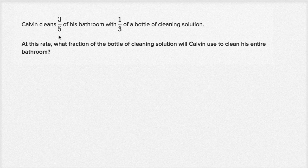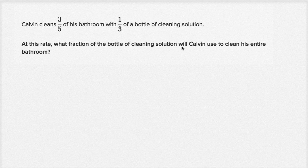I have an interesting rate problem here, and at first it's a little daunting because it has fractions, but when we work through it step by step, hopefully it'll feel a little bit more intuitive. It says Calvin cleans three-fifths of his bathroom with one-third of a bottle of cleaning solution. At this rate, what fraction of the bottle of cleaning solution will Calvin use to clean his entire bathroom? I encourage you to pause the video and try to take a stab at this yourself.